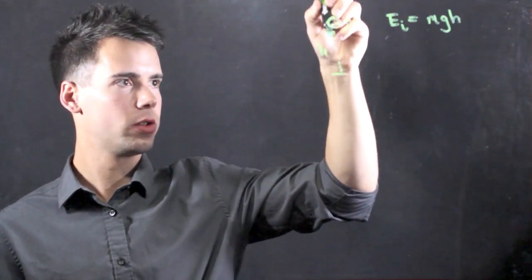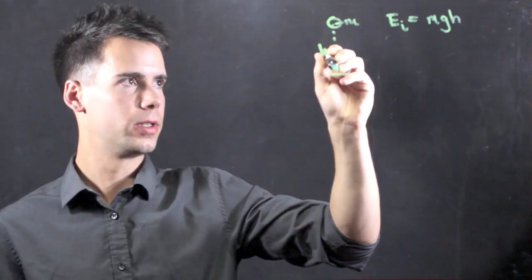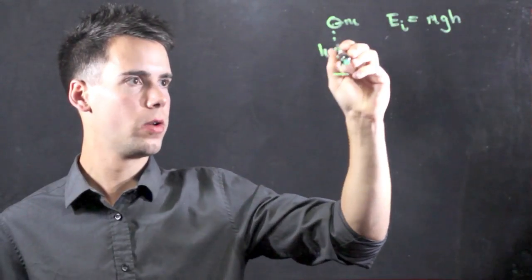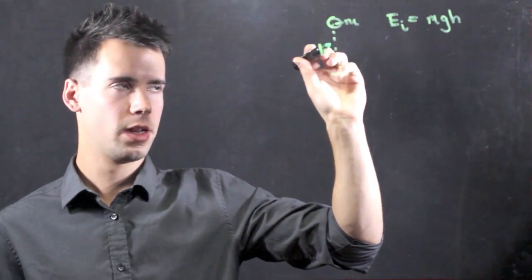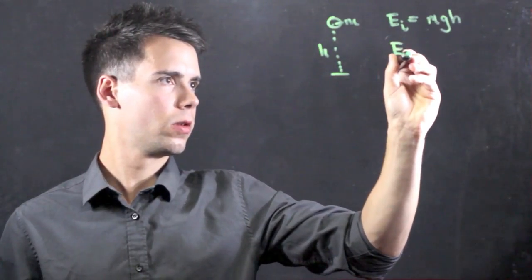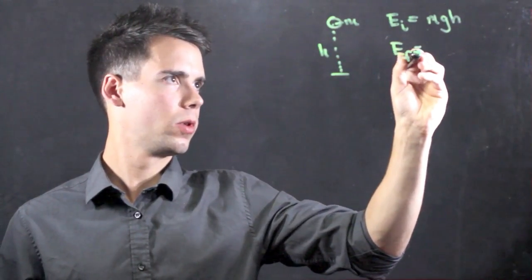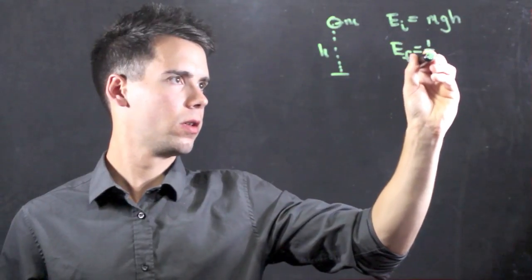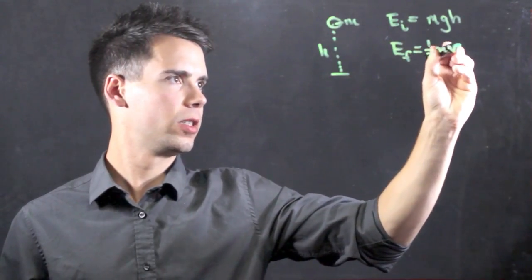And in the final state, when the ball is just about to hit the Earth, h goes to zero, so mgh is zero, and the energy is merely kinetic energy. So energy final is equal to one-half mv squared.